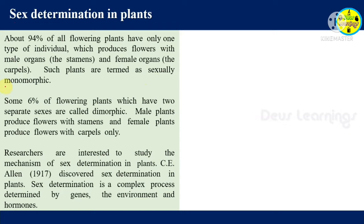So monomorphic means one individual carries both the male flower and female flower. But the remaining 6% of flowering plants have two separate sexes. The male plant produces male flowers or staminate flowers, and the female plant produces female flowers with carpels. These are dimorphic plants.